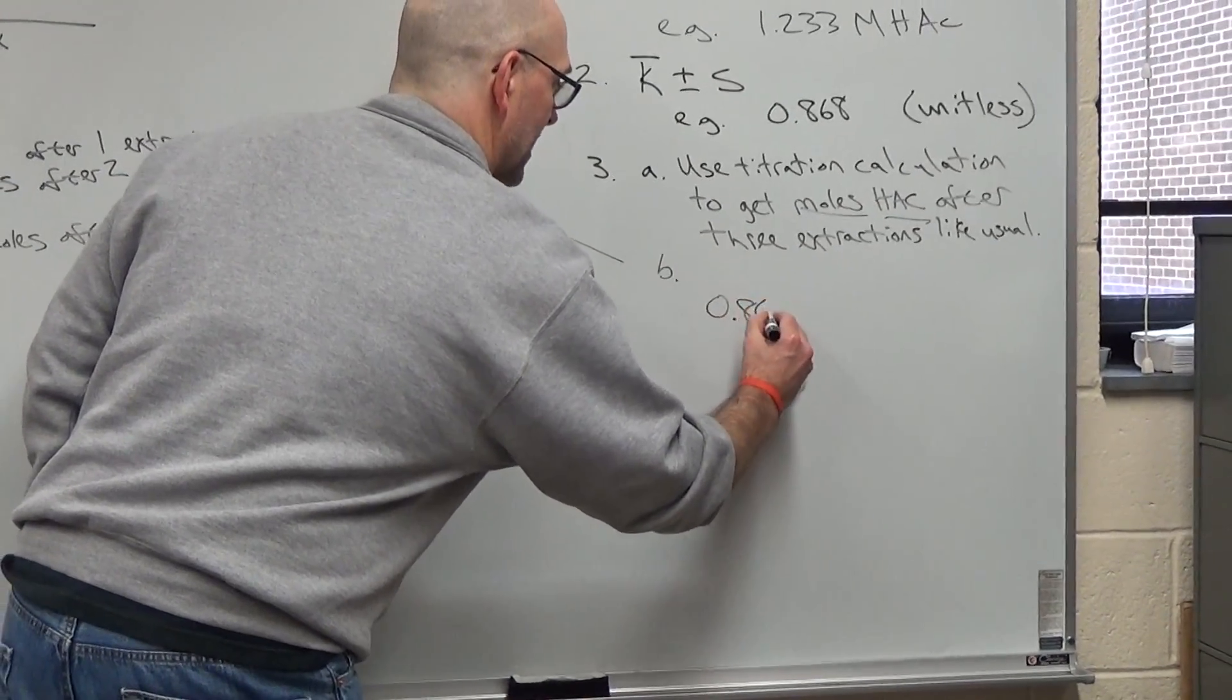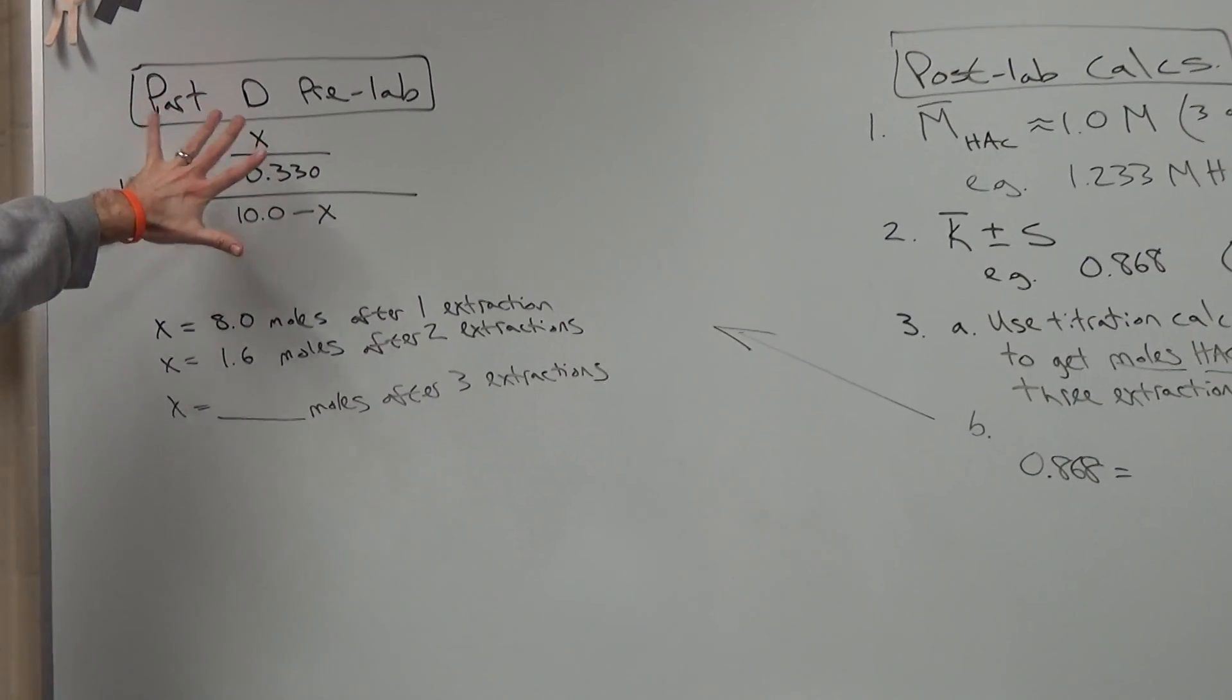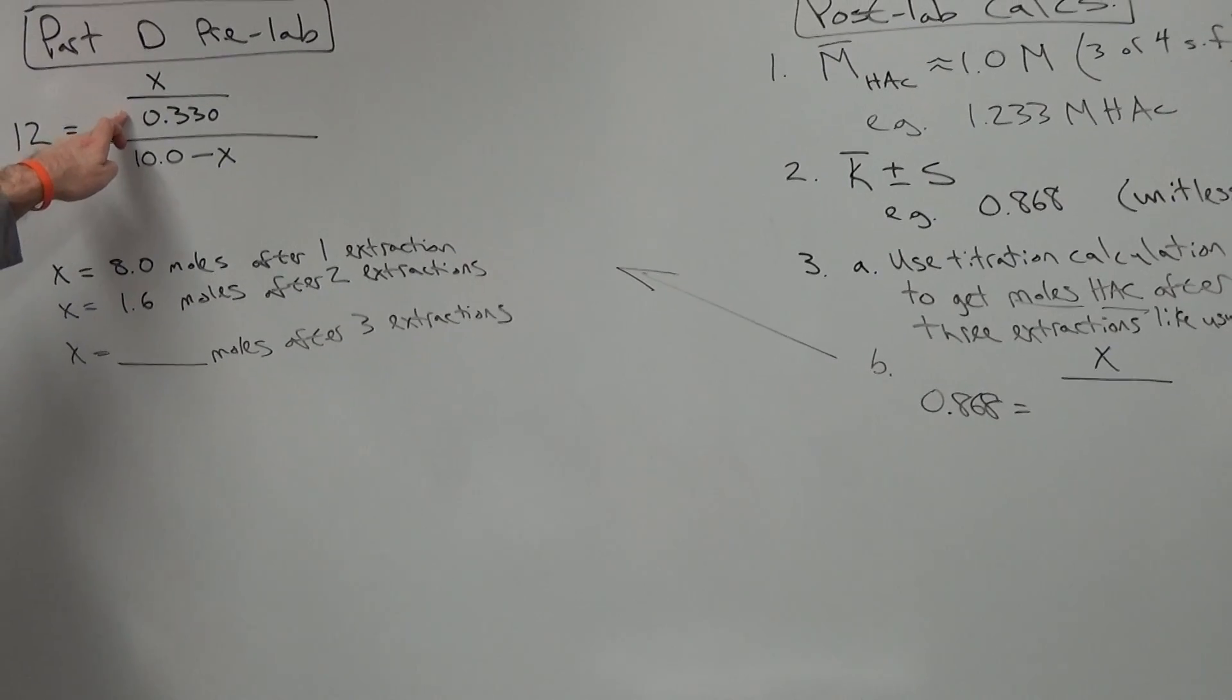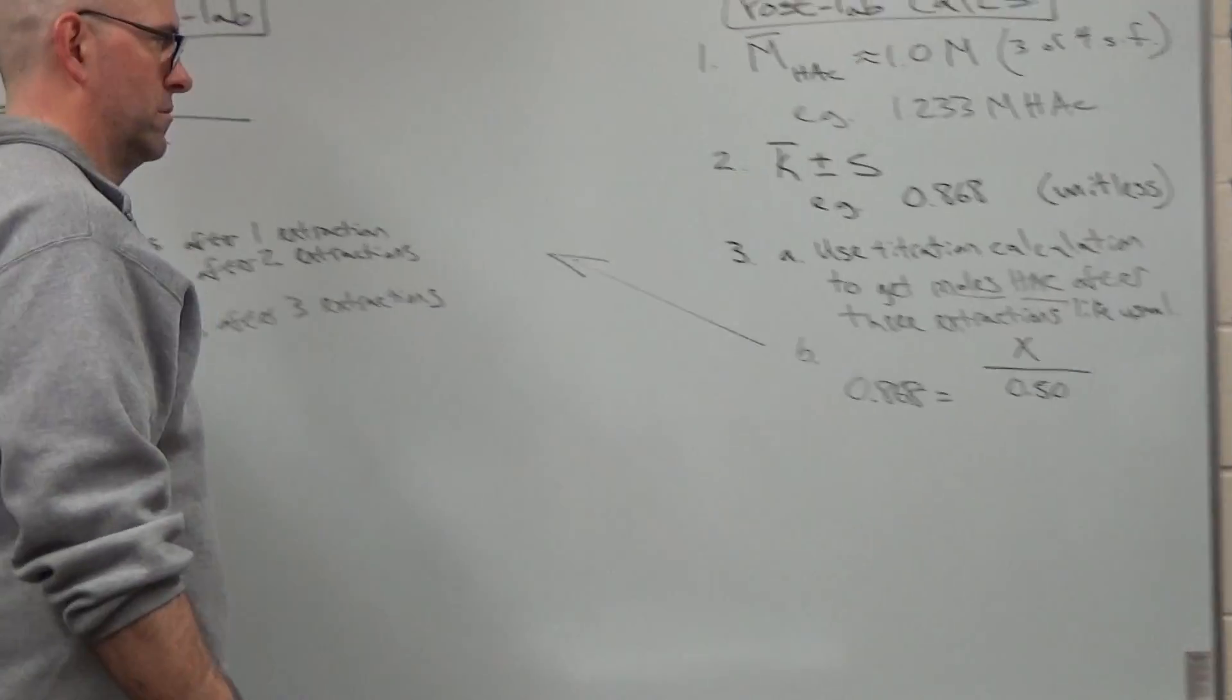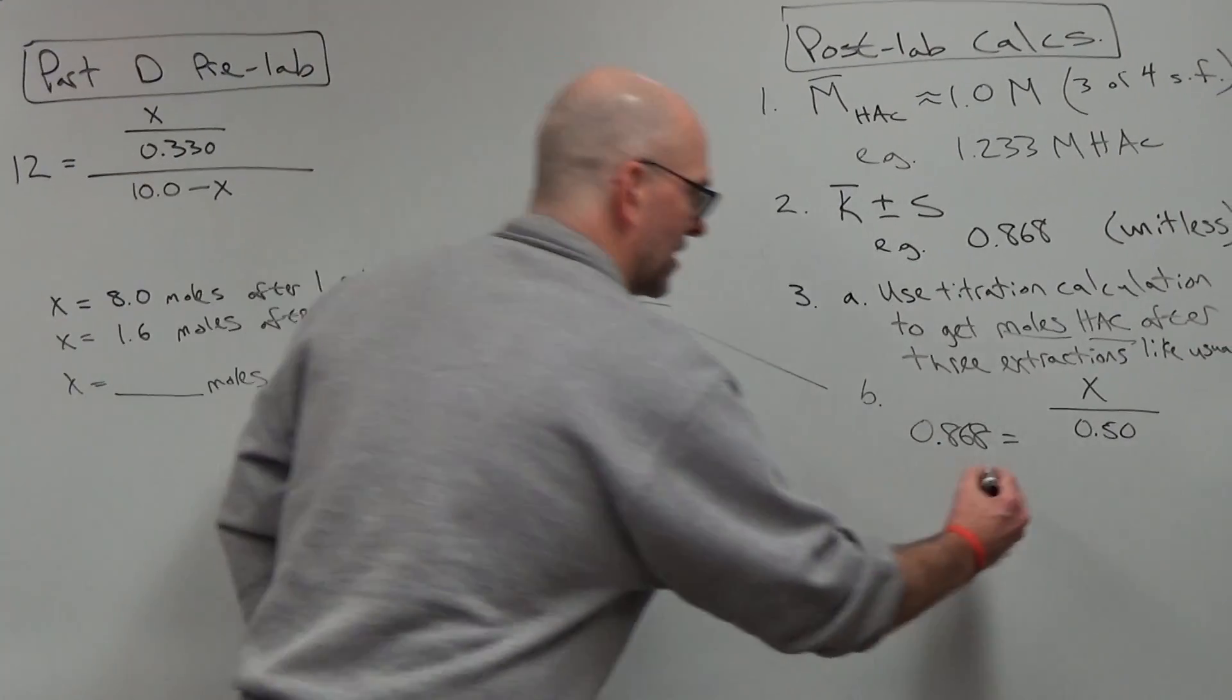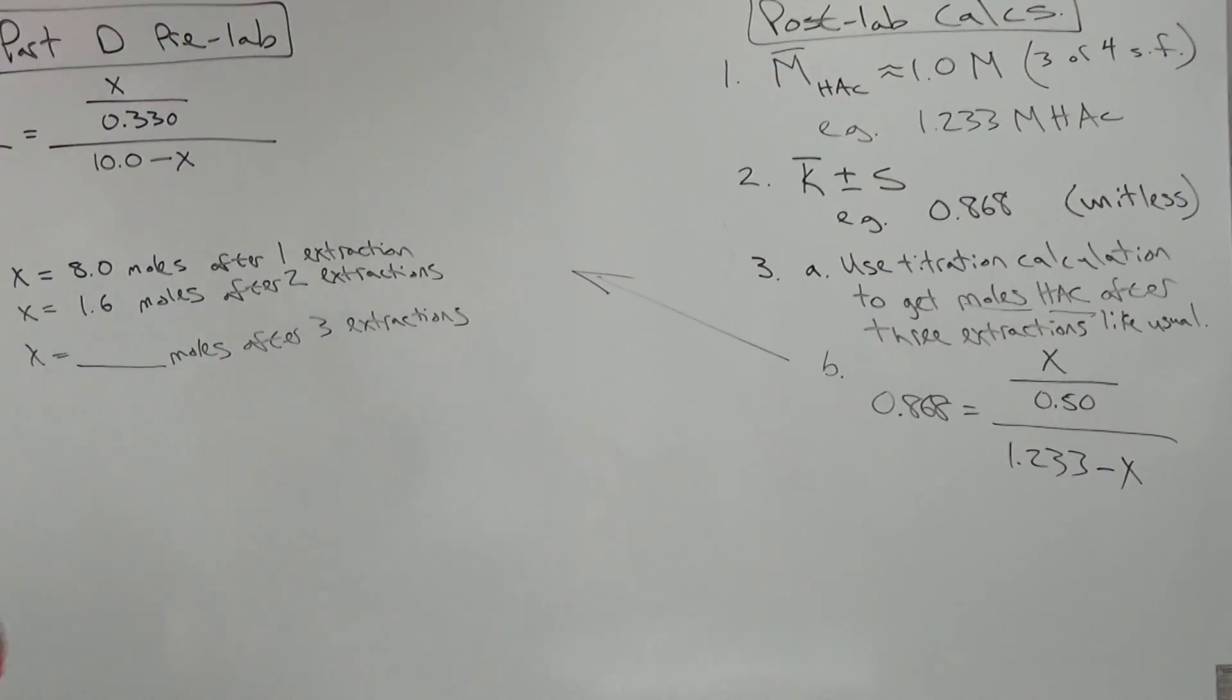So what you'll do is you'll put your value of K. So 0.868 equals, okay. X is still what you're solving for. X is the moles of acetic acid. So that variable doesn't change. It's still X. And this is the volume of TMBE used to do the extraction. It's not 0.33. It's 0.50. And then the initial molarity of your acetic acid was not 10. It was 1.33 in this case, or excuse me, 1.233.